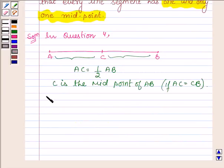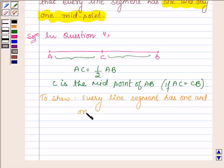And here in this question, we have to show that every line segment has one and only one midpoint.